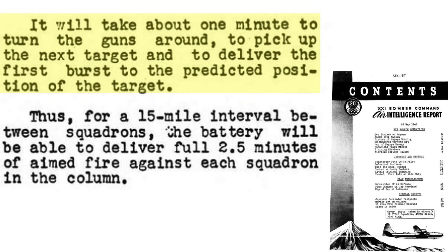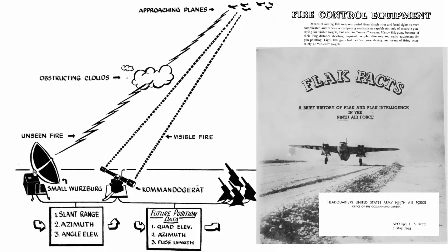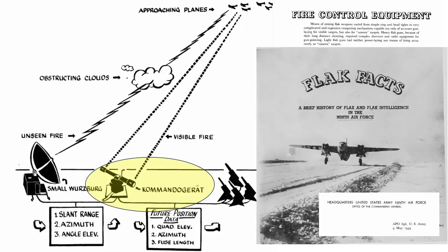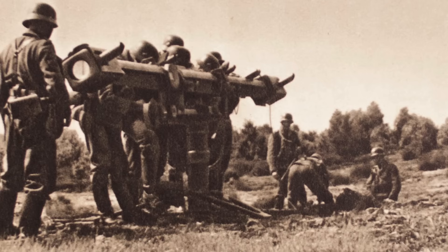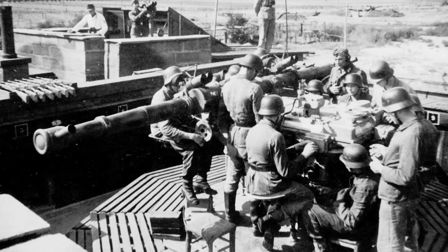It will take around one minute to reposition the flak guns, recalculate the director's ballistic solution, and account for the projectile's time of flight to detonation. The components of the integrated flak battery are shown in this image from a 1945 Headquarters United States 9th Air Force document titled Flak Facts. The main components are the small Würzburg gun-laying radar, model 40 director with integrated optical sight, and flak guns.